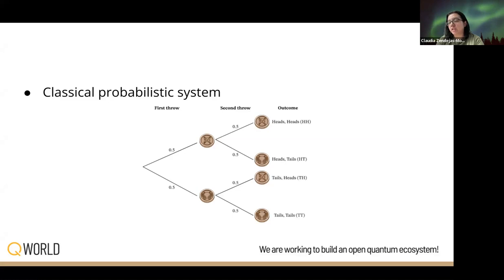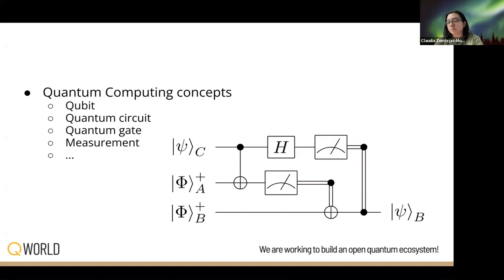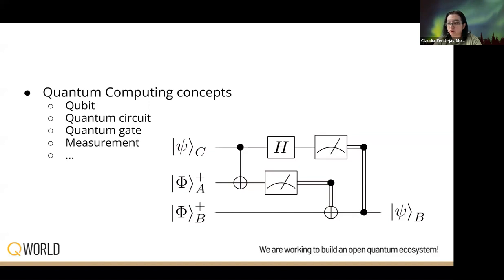We will talk about the basic concepts in quantum computing: the elements of quantum circuits, the different gates that allow us to modify the quantum state of a qubit. We will start with real-value qubits so that the states can be visualized in the unit circle, where we talk about the different rotations, quantum tomography, as well as entanglement and quantum protocols such as teleportation.